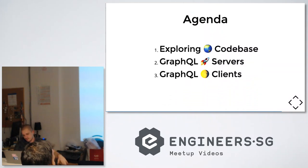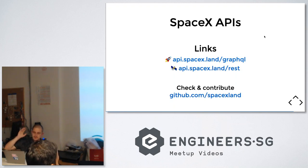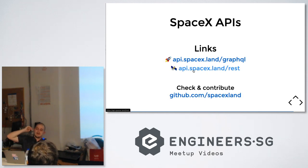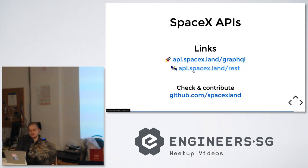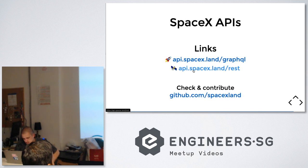We'll start with the code, then the GraphQL server, then the GraphQL client, and we are going to be using the SpaceX GraphQL API. We've got two of them — api.spacex.land/graphql and api.spacex.land/rest, which is a fully-typed auto-generated REST API based on a GraphQL schema. With about 30-40 lines you can auto-generate a fully-typed REST API from your GraphQL schema. All the code is open source at github.com/spacex.land.